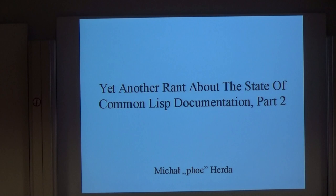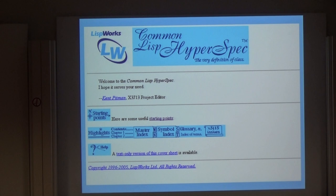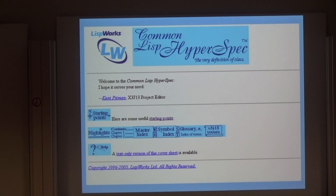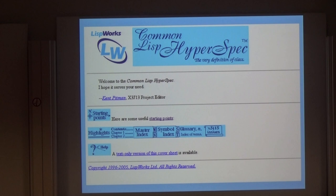I would like to begin with an image that all of us Common Lisp people should be familiar with: the Common Lisp HyperSpec — the very definition of class. It is basically a web version of the Common Lisp standard. Very useful because it solved countless problems, countless disputes, and created some new ones. First of all, it looks like it was made in the 90s. This is an actual thing that I heard with regards to the HyperSpec. It is not very user-friendly when it comes to being searchable, for example.